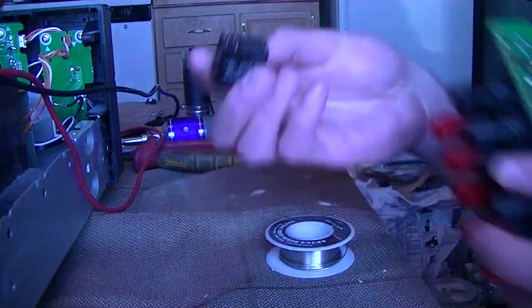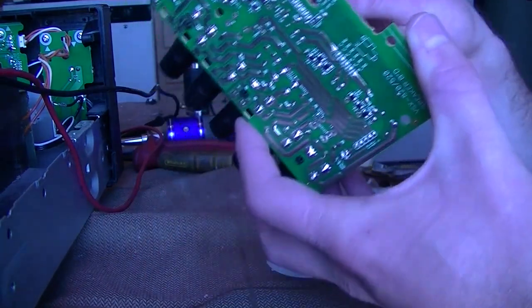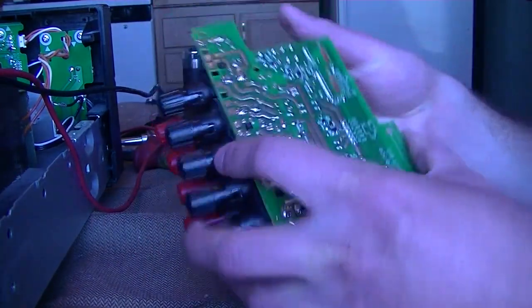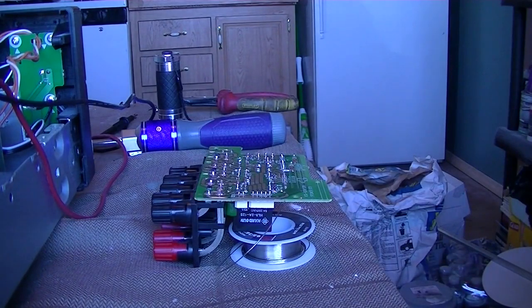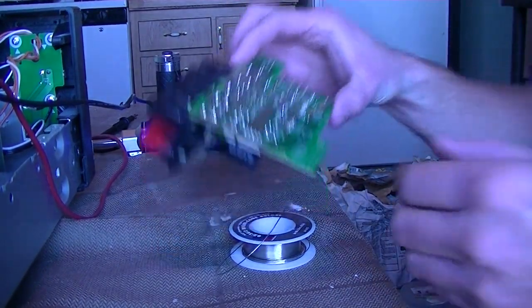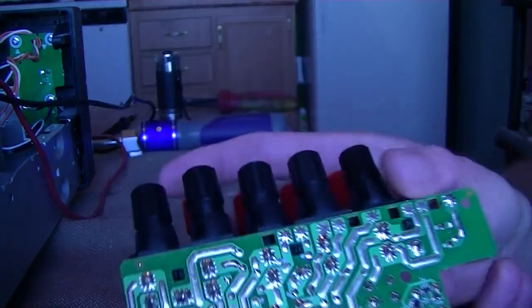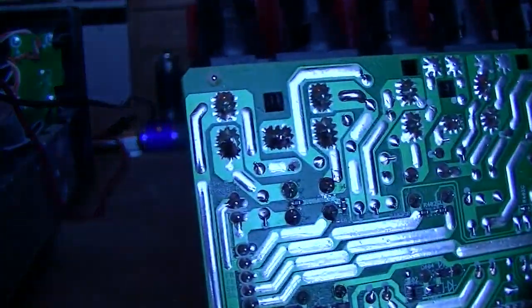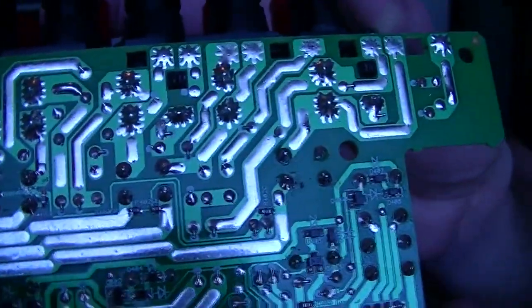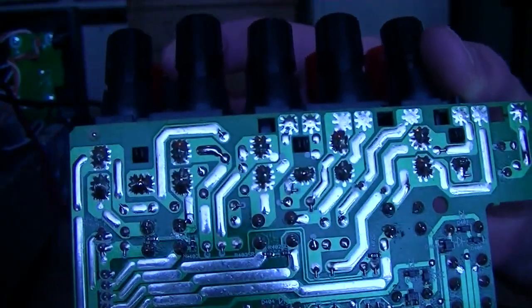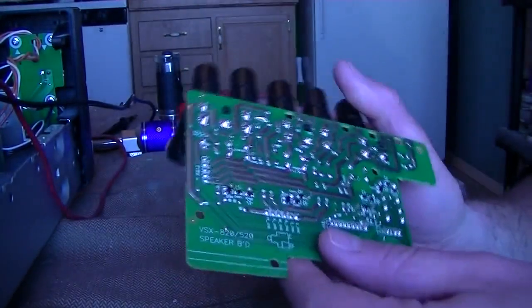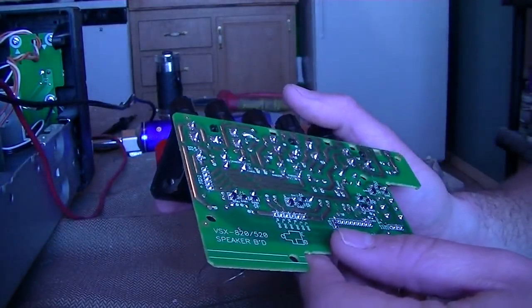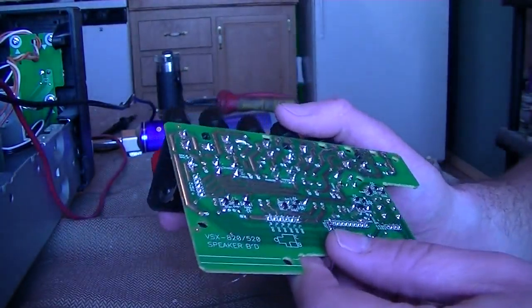Pull this one out. There we go. And we'll just swap it around. And there we go. A nice, good, clean solder job right there. Thanks to that nice fine wire, silver, rosin core solder. Alright. Let's go ahead and put this board back in the receiver. And we'll hope that we've got everything taken care of now.